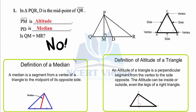New concepts in this class are: first, median; and second, altitude of a triangle. Altitude is nothing but the height of a triangle, just as any shape has a height. Let's go into depth on both.